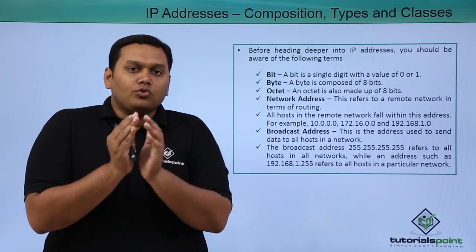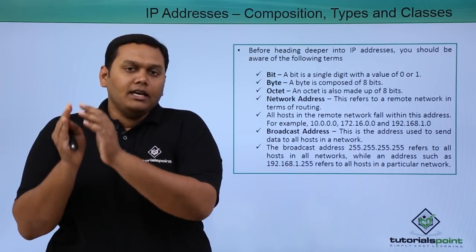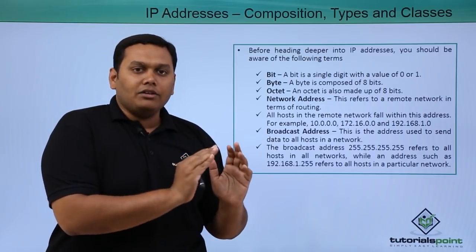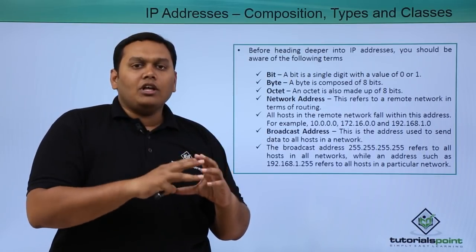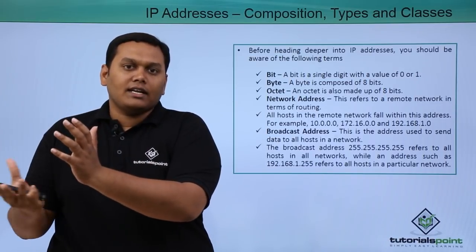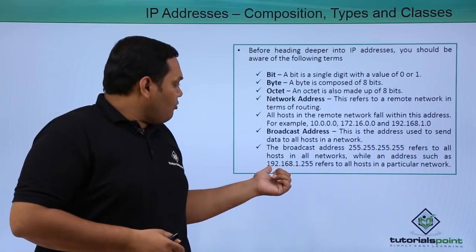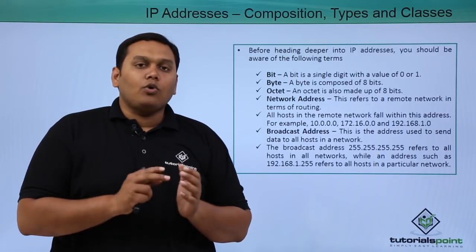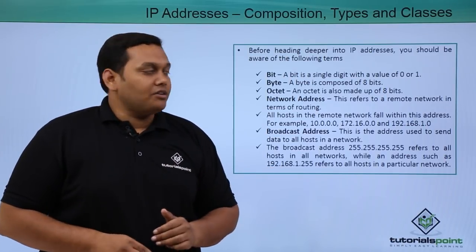So you can see 255.255.255.255 refers to the broadcast address for all hosts in all networks, but particularly for one network, all hosts connected take an example of 192.168.1.255. This is called a broadcast address.